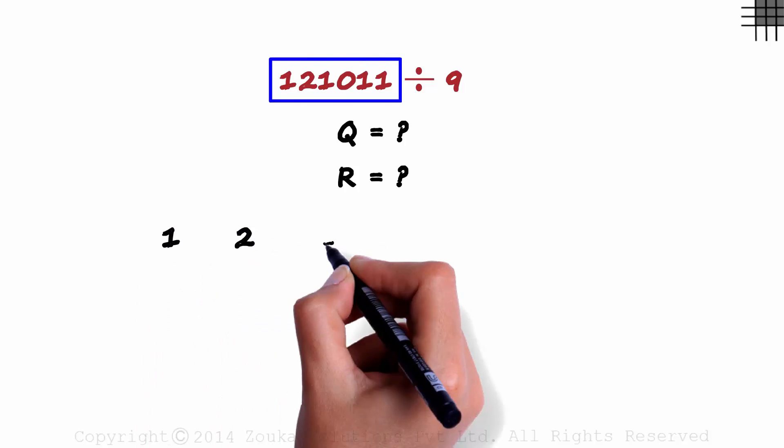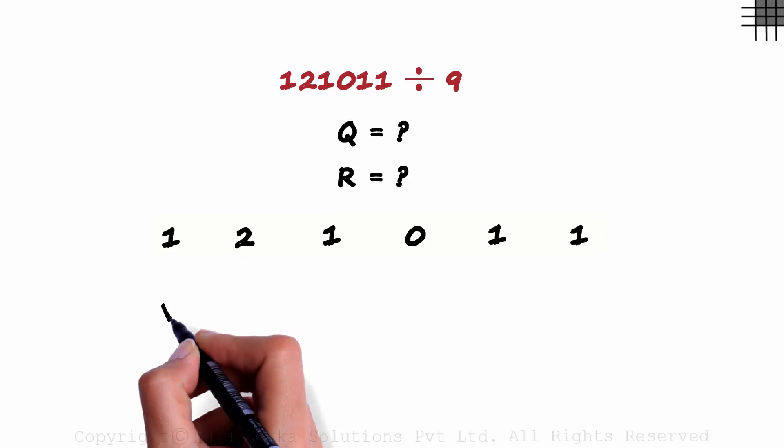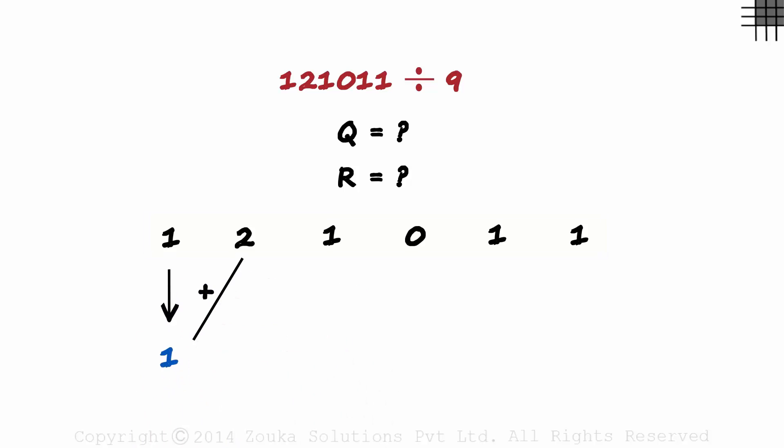First, we write the dividend as is. Once the dividend is written, we copy the first digit down and add this with the second digit.